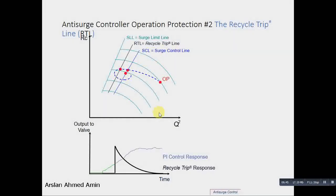When the operating point comes back to the surge control line, the recycle trip response diminishes like an exponential decay. This is an exponential decay response. The total response would be the sum of this and this. This is how the advanced antisurge control algorithm works.